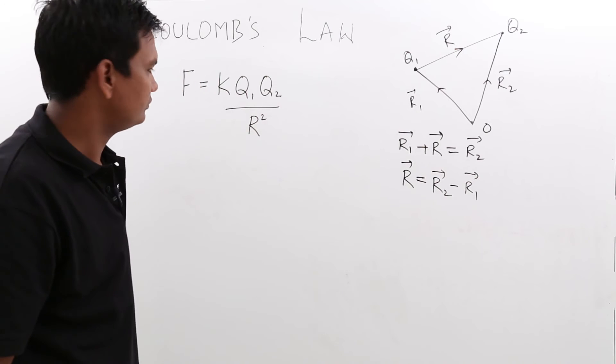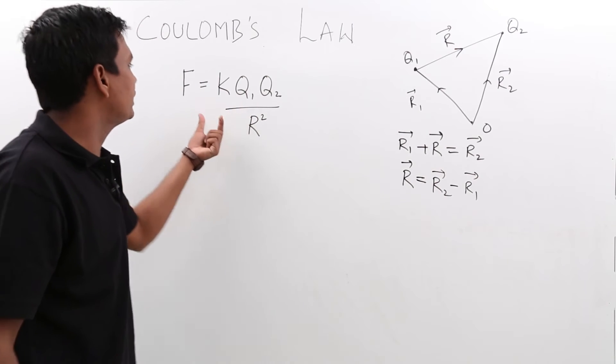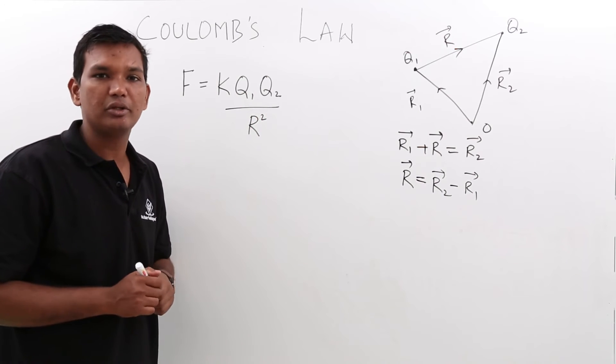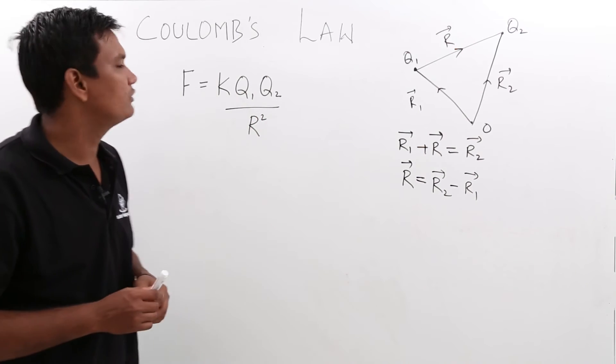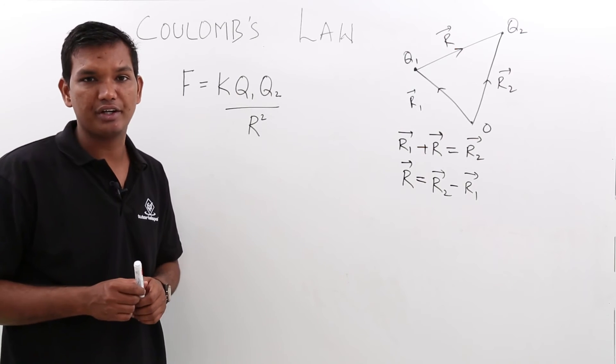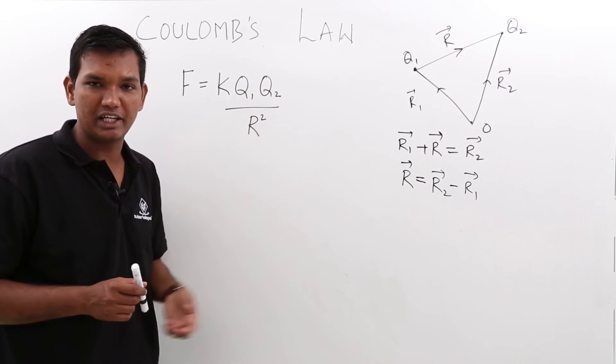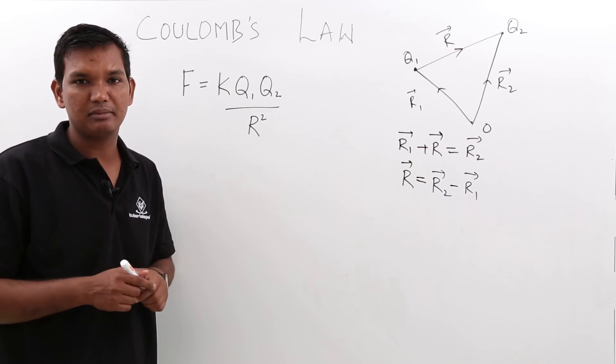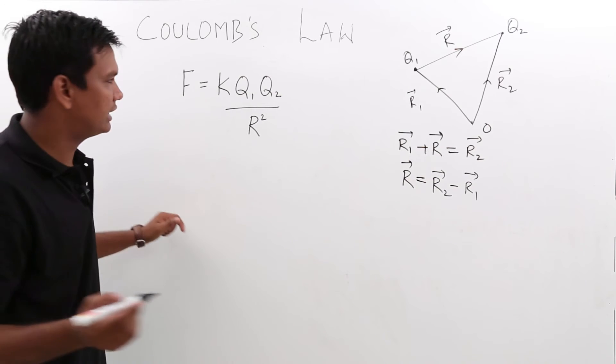Now one more thing if you have to observe is when you are saying force, it should have a direction, because in the initial class itself we have said force is a vector quantity. But if you look here there is no direction, because when you push somebody or you pull something it has to be some direction. So let me add that direction.